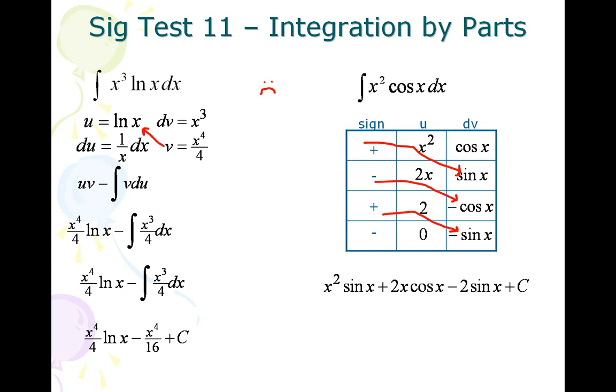So not too bad, tabular is pretty easy to use, I know you guys like it, but ln ones are not too bad. You just got to be ready for them and they're pretty easy to work with once you remember the formula is uv minus integral of v du.